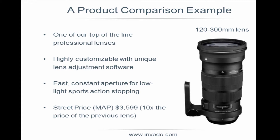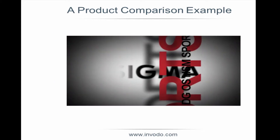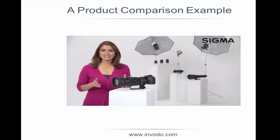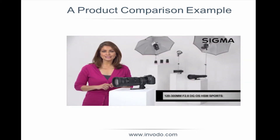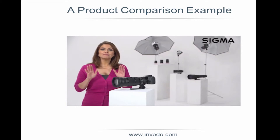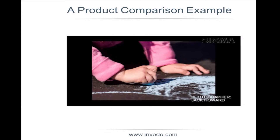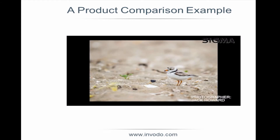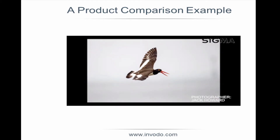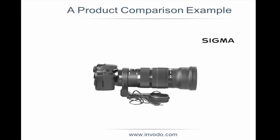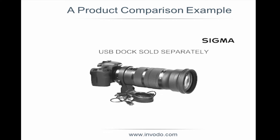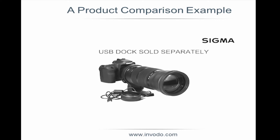The Sigma 120-300mm f2.8 DG OS HSM sports lens combines the performance of a prime telephoto with constant aperture zoom versatility. This lens is an action-stopping all-star. Features including optical stabilizer and splash- and dust-proof construction help make winning shots. This high-performance professional lens can be paired with the optional USB dock for customization of autofocus speed and focus limiter range.